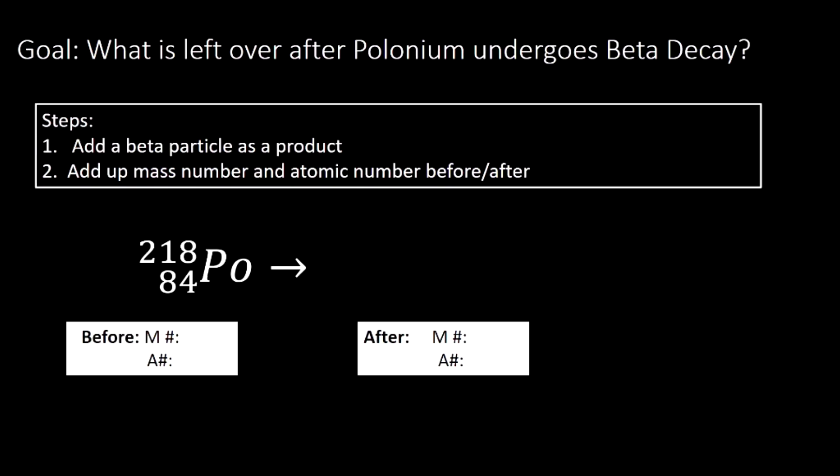Just like in alpha decay, we're going to begin by writing our decay products. In this case, it's a beta particle. So we know that we're going to get out our beta particle, which uses the Greek letter beta, and has a negative one there at the bottom. Then we're going to add up the mass numbers and atomic numbers before and after. Before we have 218 in our mass number and our atomic number is 84. After our mass number turns out to be zero and our atomic number is negative one.